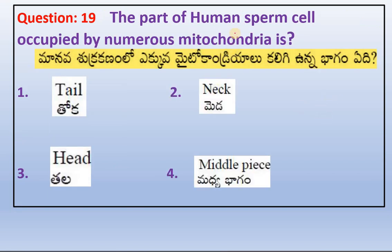The part of the human sperm cell occupied by numerous mitochondria is the fourth option — the middle piece.